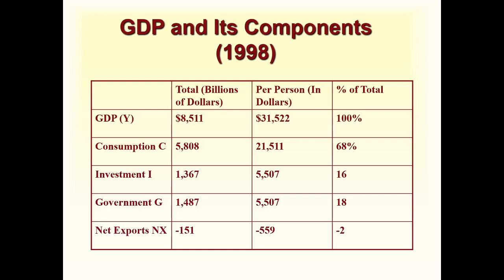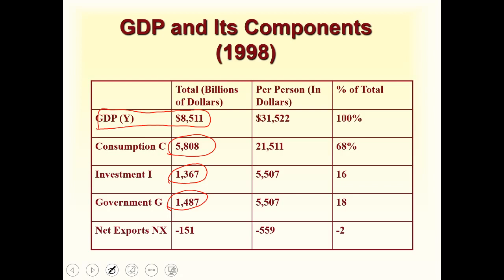Here is an example for the United States in 1998. The GDP of the US was 8,511 billion dollars — that is 8.5 trillion dollars. Of this, 5.8 trillion dollars was consumption, investment was 1.367 trillion dollars, government purchases were 1.487 trillion dollars, and net exports were negative — meaning the US had more imports than exports, so net exports contributed negatively to GDP.